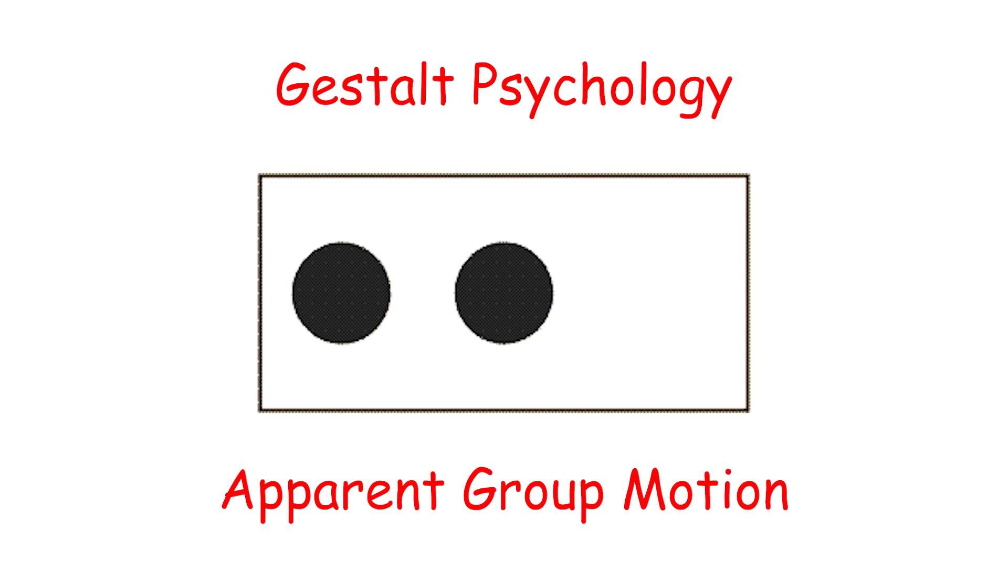Ternus Illusion. In this GIF, it seems like only one circle is moving, but if we add a small blank frame, it seems like they are both moving. This is closely linked to Gestalt psychology, and it's a type of apparent group motion.